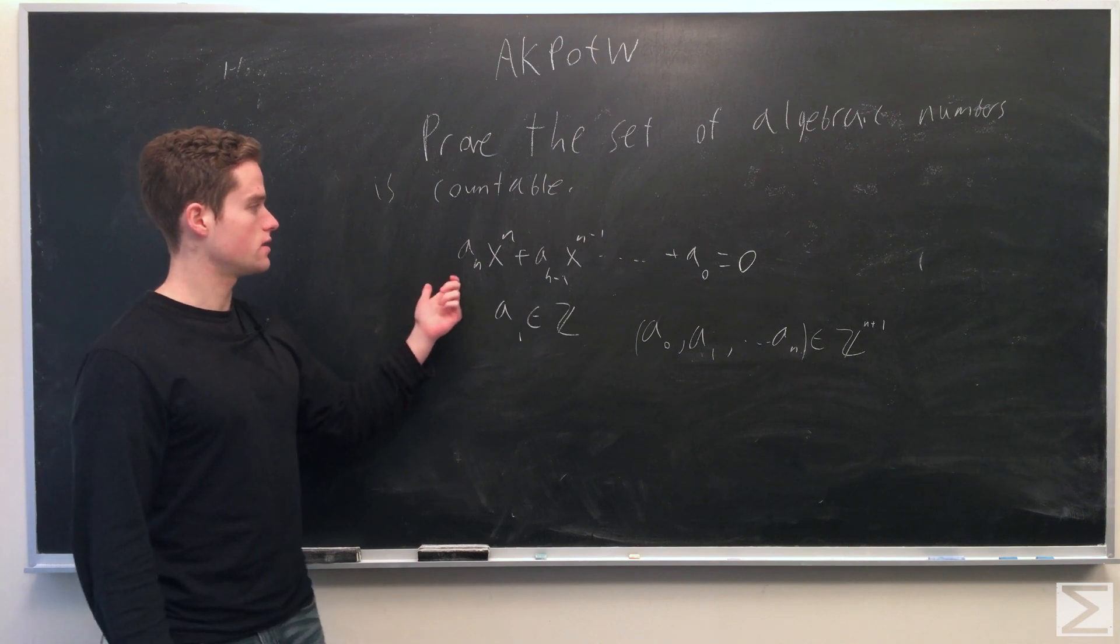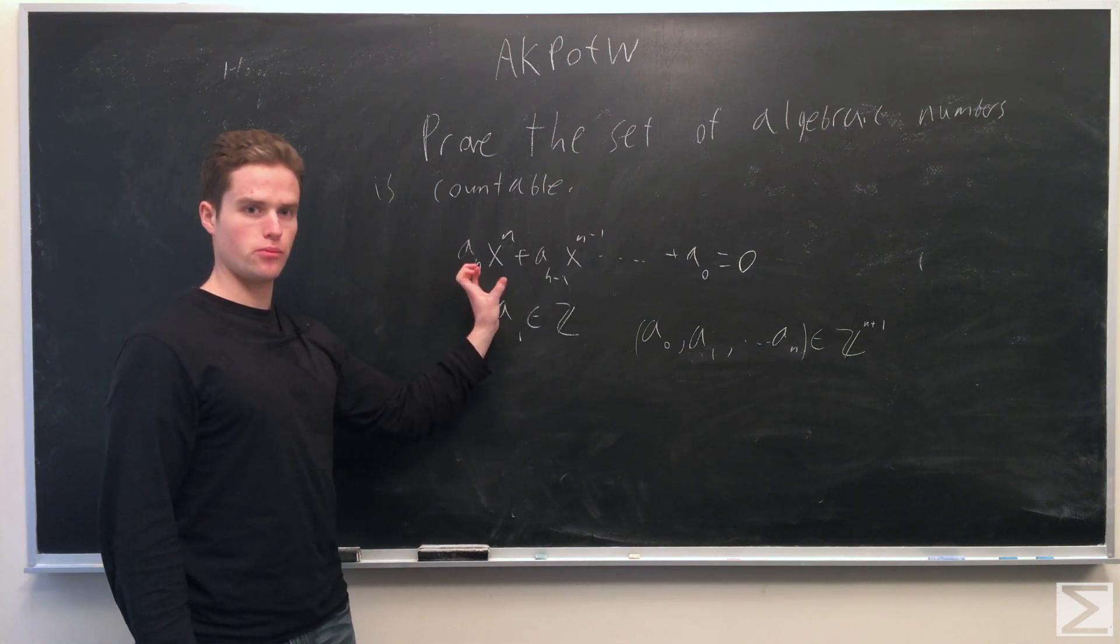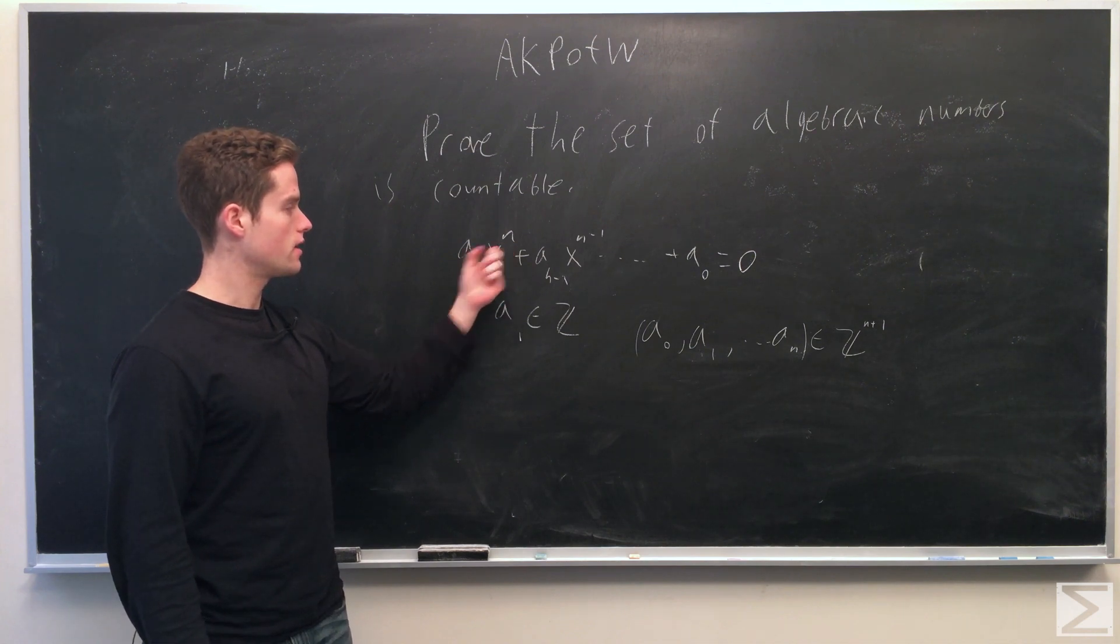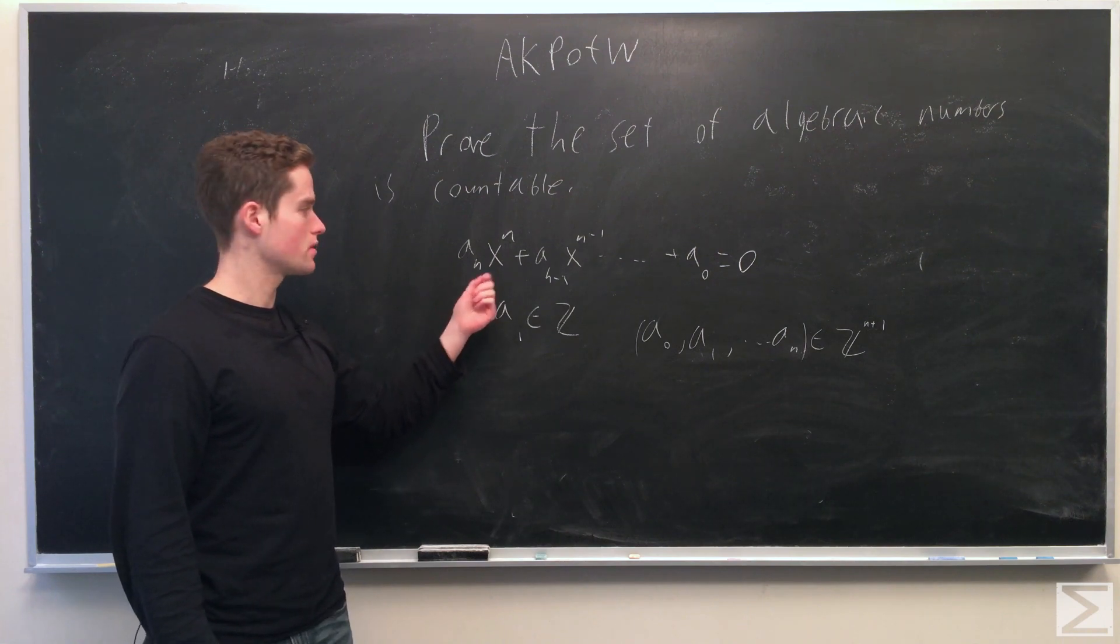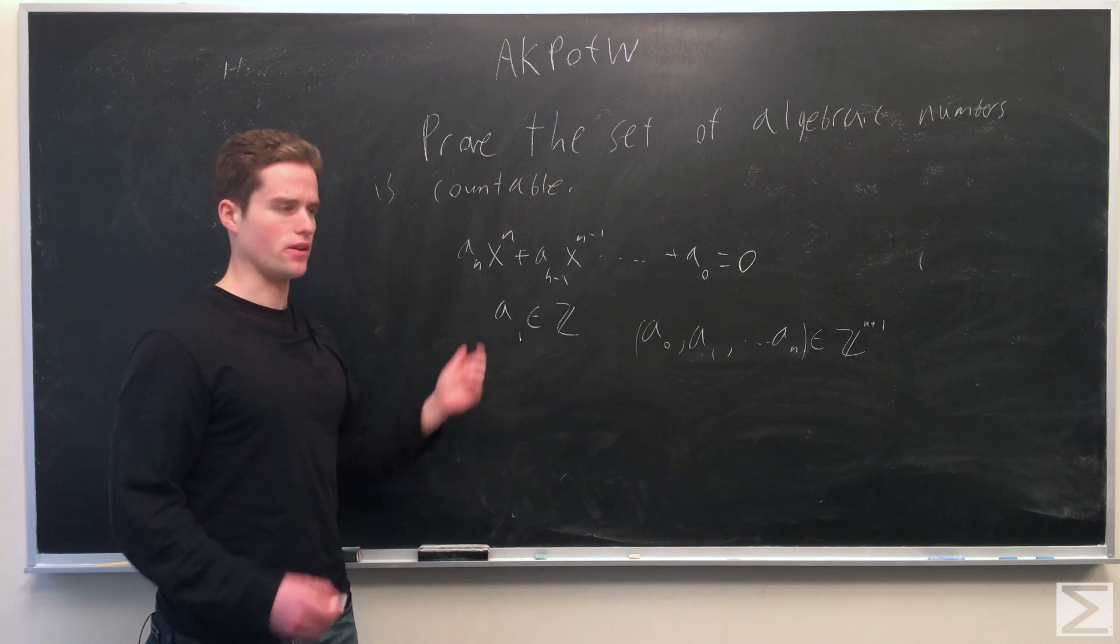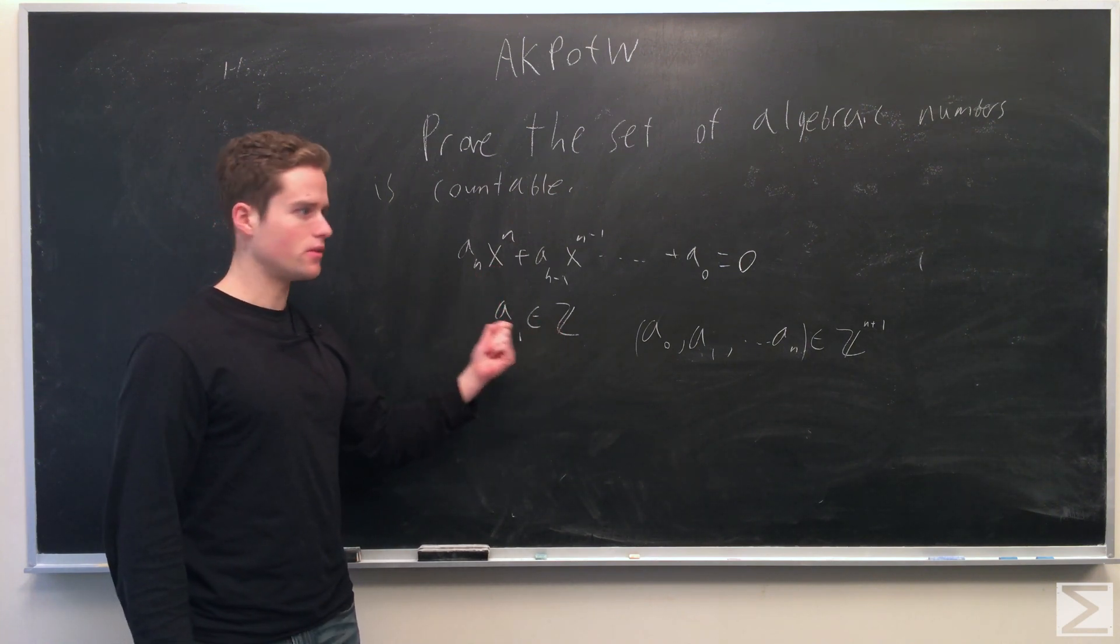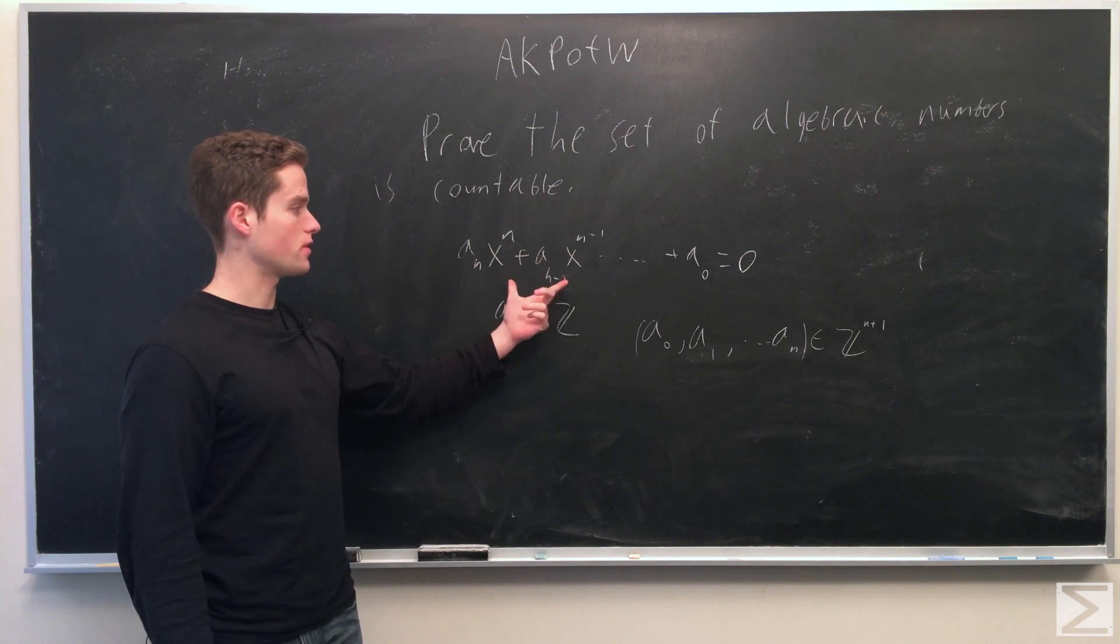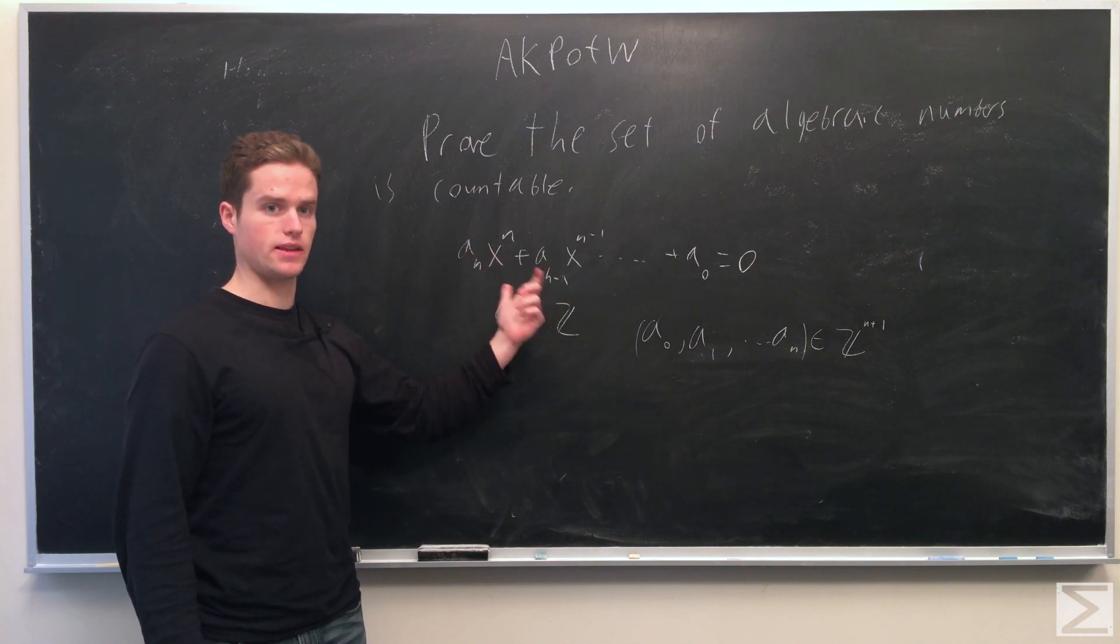And so that tells us, looking at just all the algebraic numbers that are roots of polynomials of this form of some power n, this will again have at most the enumerability of the product of n with a countable set, which is again countable. So the number of algebraic numbers corresponding to polynomials degree n is countable.